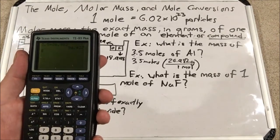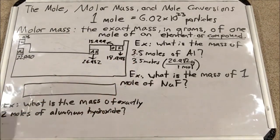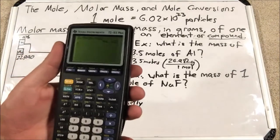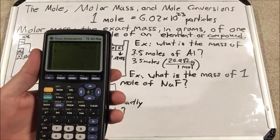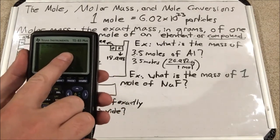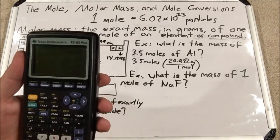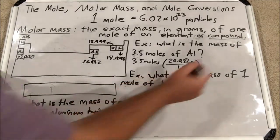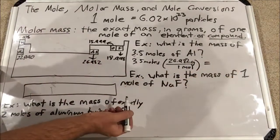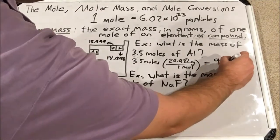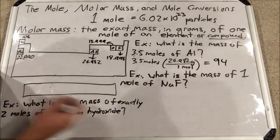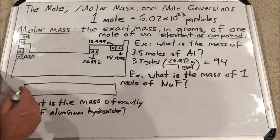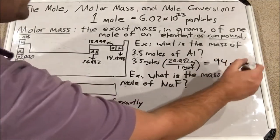My original number, 3.5, has two significant figures, so I can only have two sig figs in my final answer. I round to the ones place, which rounds down to 94. Since moles cancel, I have grams left — so the answer is 94 grams of aluminum.